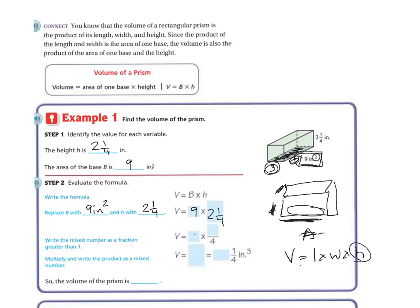So I've got 9 times, and then we need to change this into a mixed fraction. So the way I do that, remember we do 2 times 4 is 8, plus the 1 is 9. So I get 9/4.